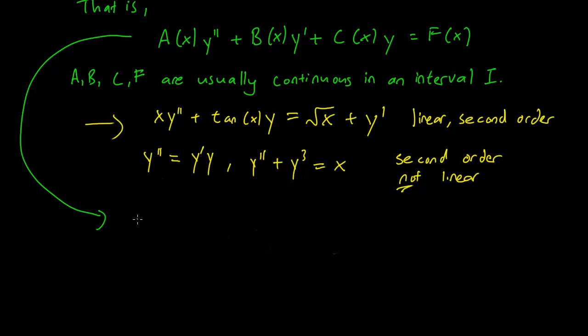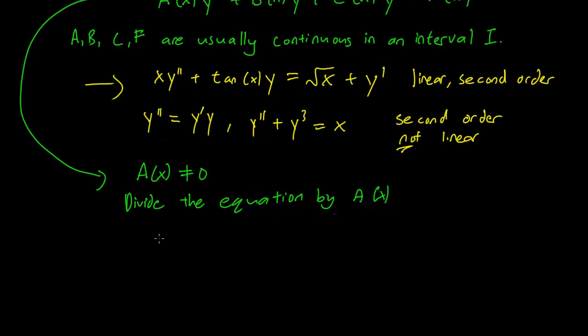Here in this chapter, we usually assume that A(x) is never zero. And we can then divide the entire equation. So what we have here is that we can isolate the y double prime term. And that's usually something that we like to do in all our differential equations anyway, right? To make sure that the highest derivative term is by itself.